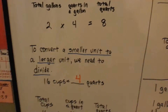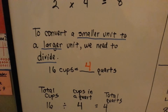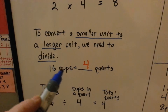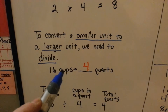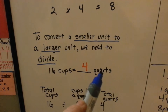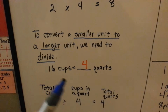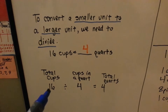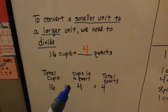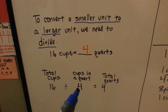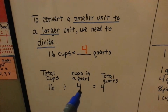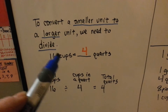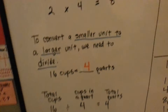To convert a smaller unit to a larger unit, we need to divide. To convert 16 cups, which is a smaller unit, to quarts, which is a larger unit, we need to divide. The total cups are 16. We divide by the cups in a quart, which is 4, and that tells us there are 4 quarts. 16 cups equals 4 quarts.